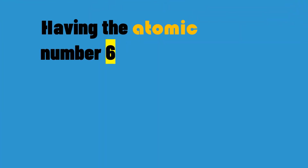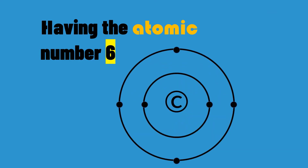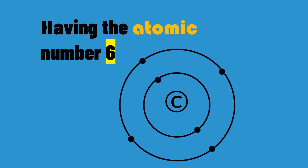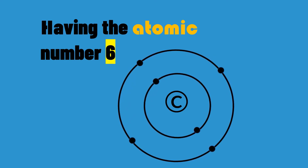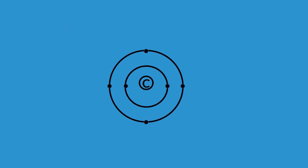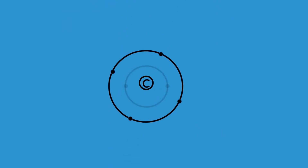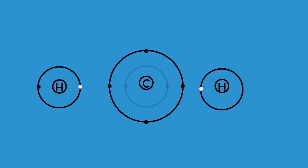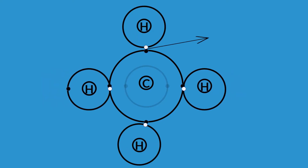Having the atomic number six, every carbon atom has a total of six electrons. Two are in a completed inner orbit, while the other four are valence electrons, which are the outer electrons available for forming bonds with other atoms. The carbon atom's four valence electrons can be shared by other atoms that have electrons to share, thus forming covalent shared electron bonds.